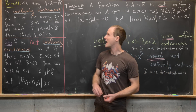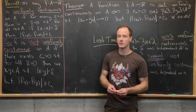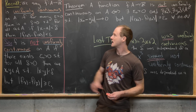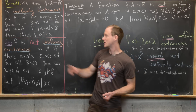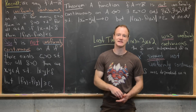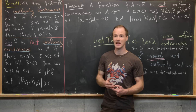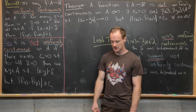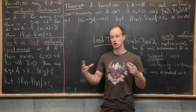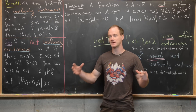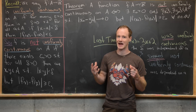We say that f from A to ℝ, where A is a subset of the real numbers, is uniformly continuous on A if for every epsilon greater than zero there is a delta greater than zero such that for all x, a in A, if |x − a| < delta then |f(x) − f(a)| < epsilon. The important thing to notice is that unlike continuity, uniform continuity is a global property — it's about something happening on a set, whereas continuity is something happening at a point.